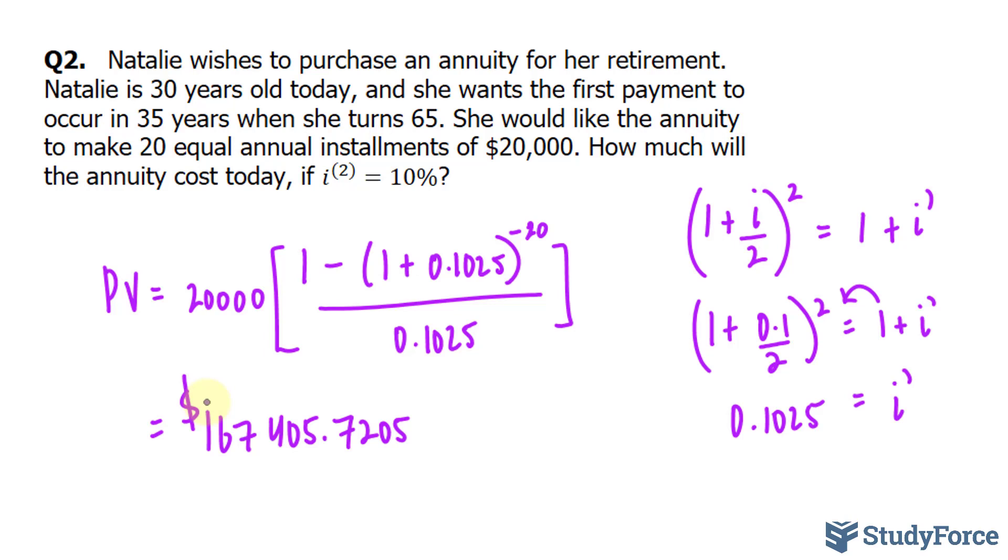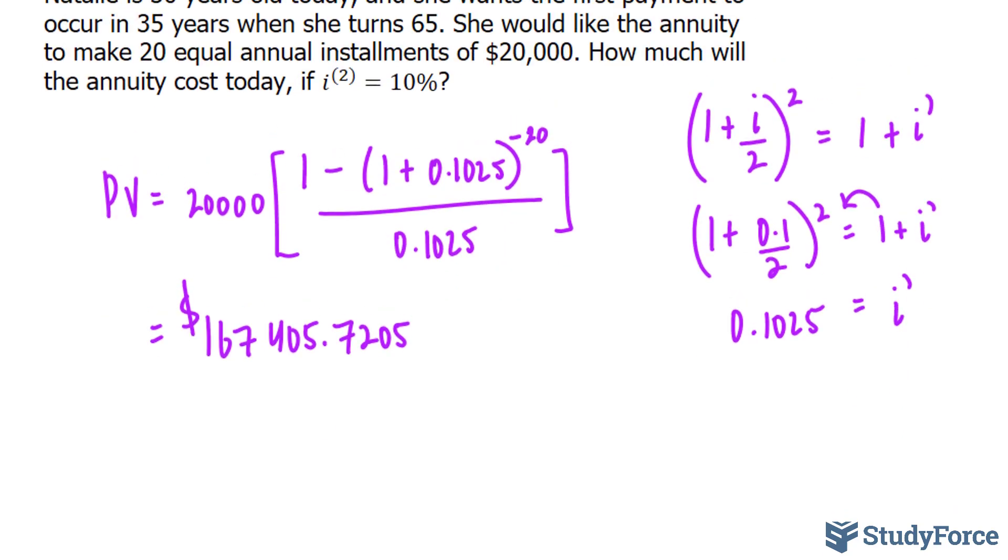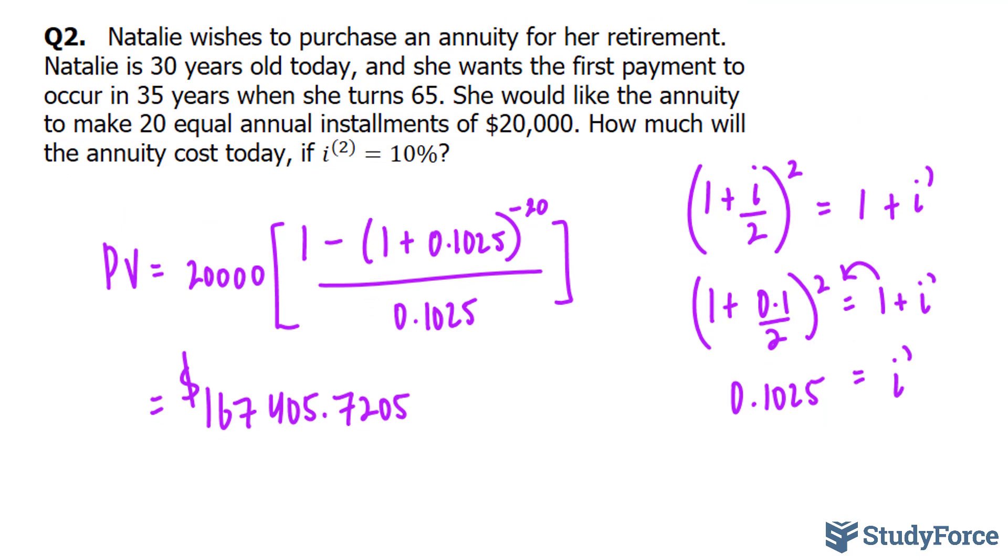That's the present value when she's 65 years old. And what we're seeking in this question is, what does she have to put into her account right now, such that in the next 34 years, the amount that she puts in right now, at this rate, will grow to that present value, so that she can purchase this annuity and start to gain that $20,000 every year thereafter.